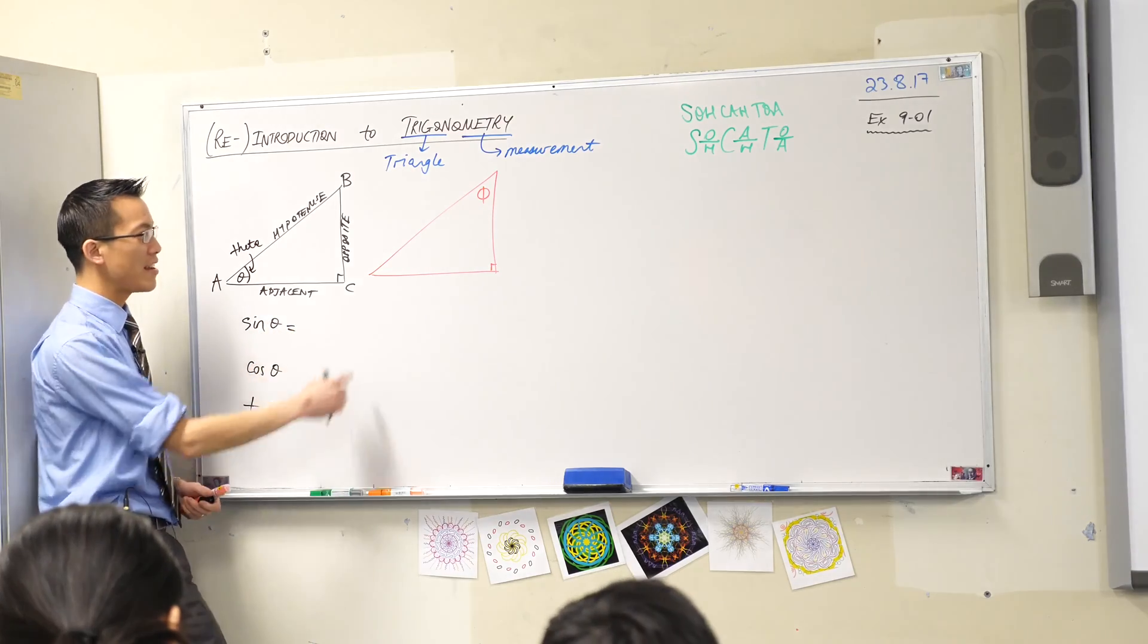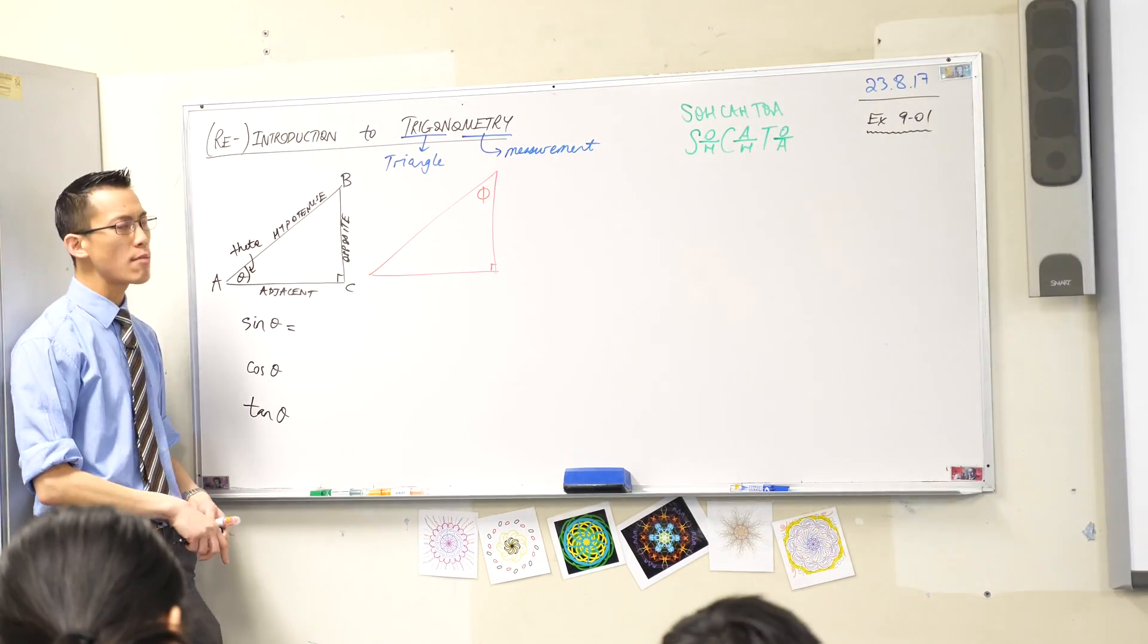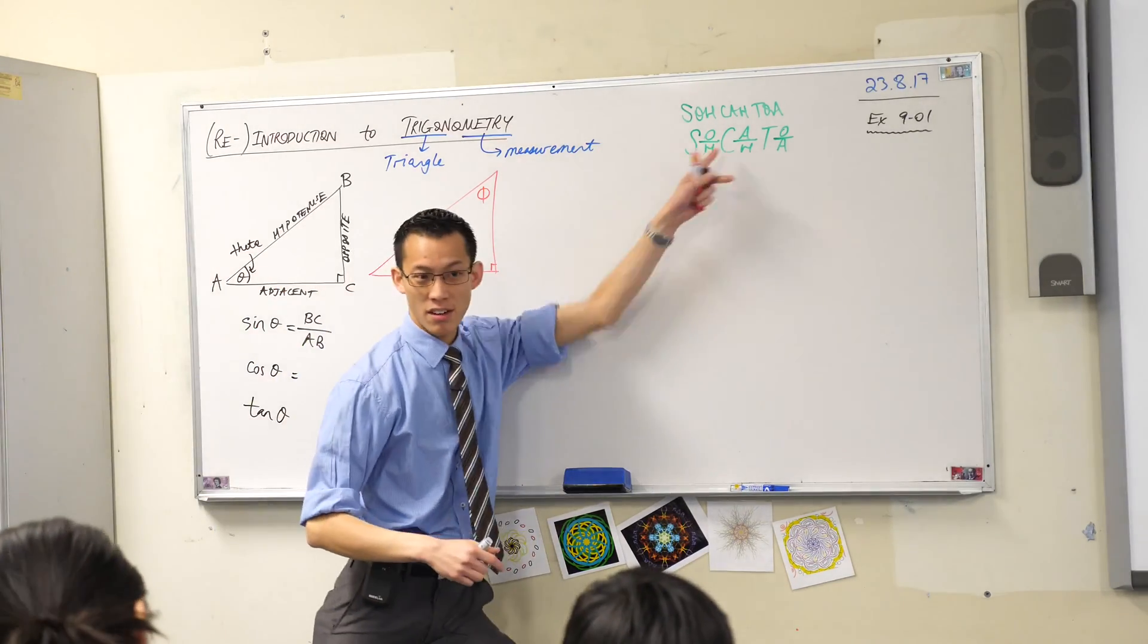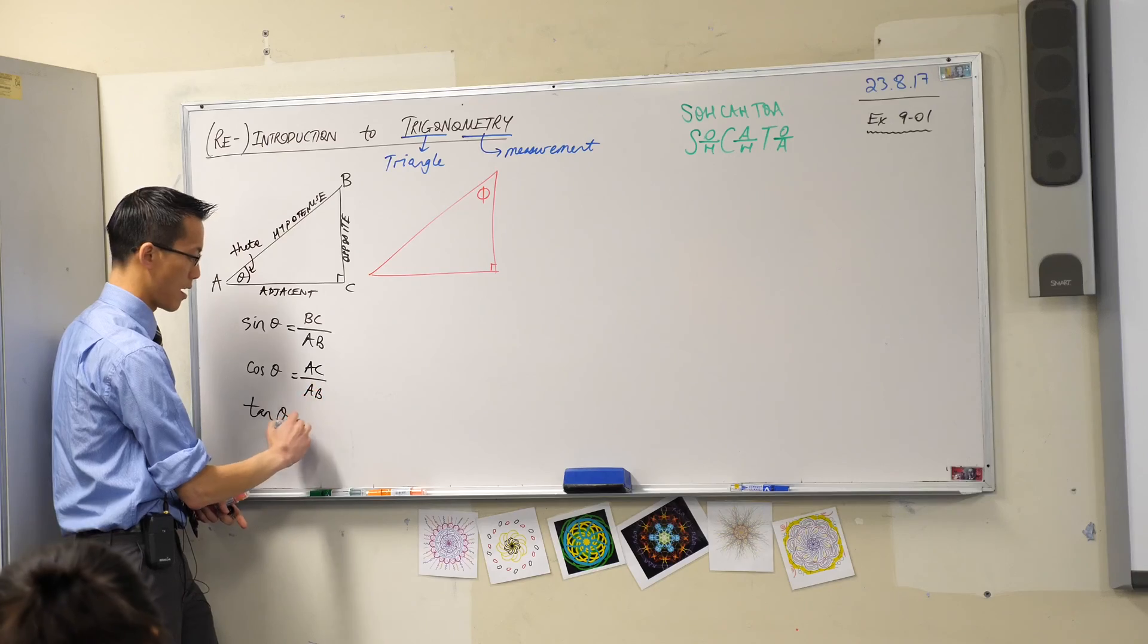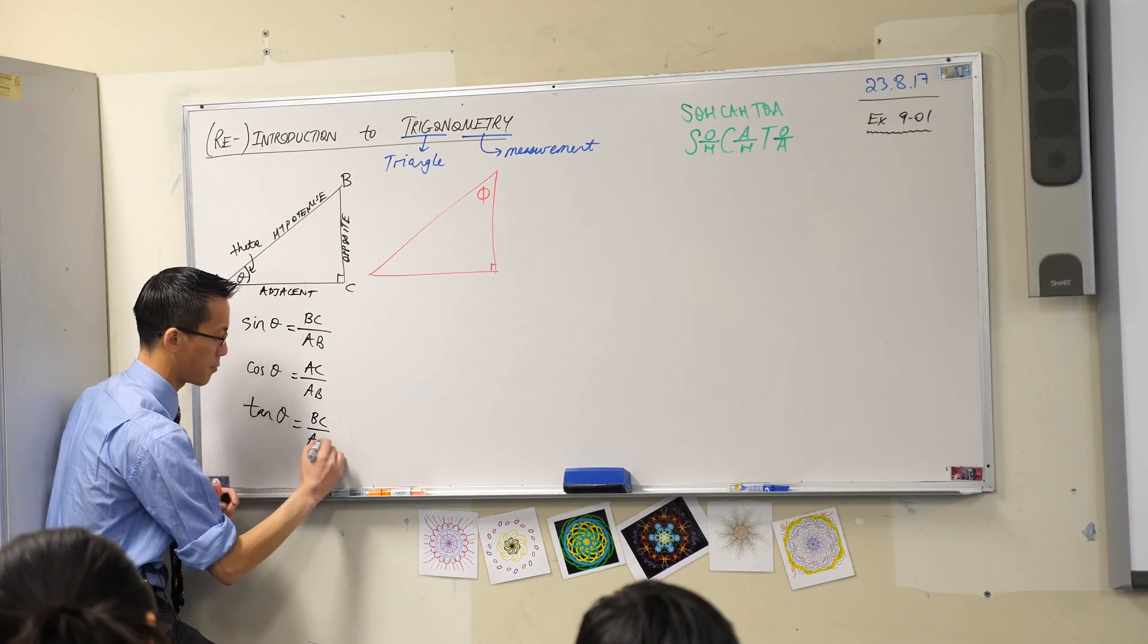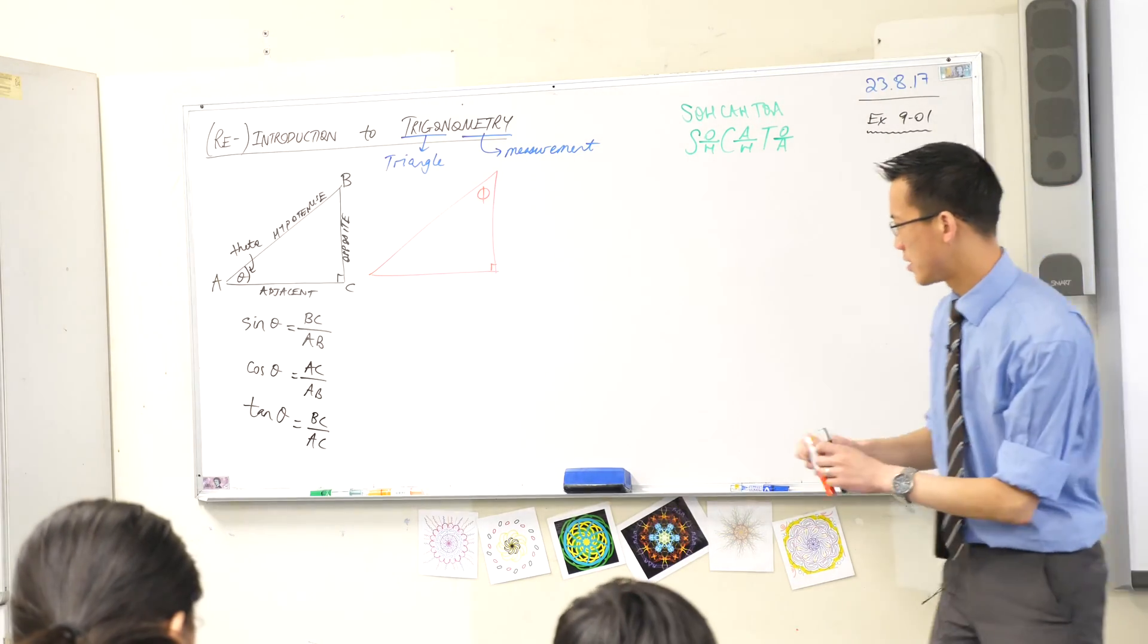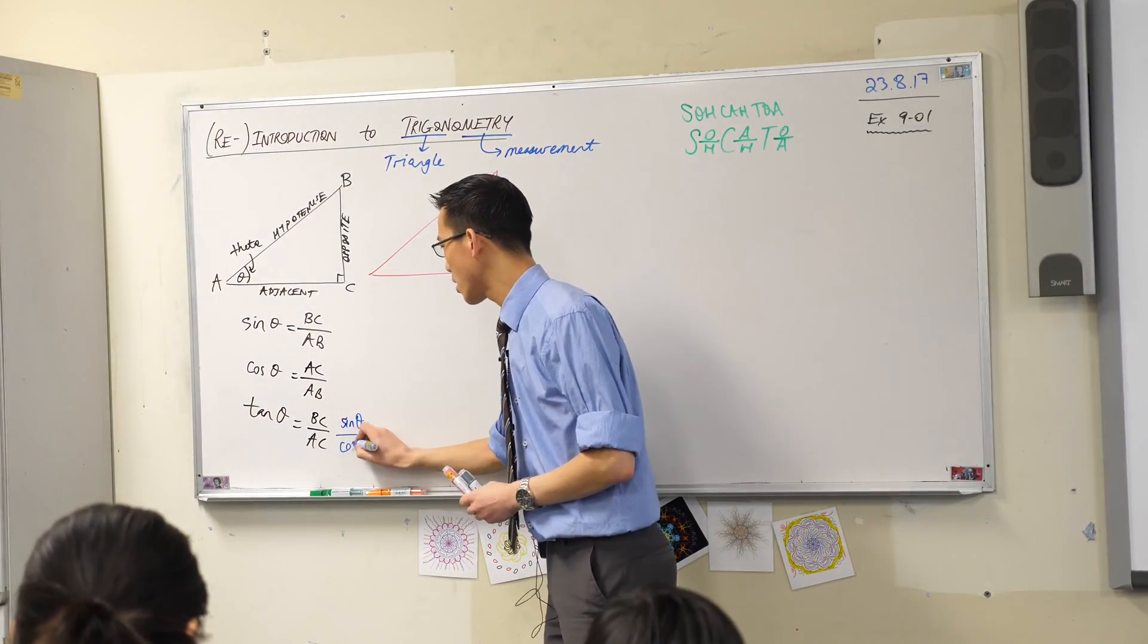So either of those is fine. Let's have a look at what it means in this particular triangle for this particular angle. Sine is opposite on hypotenuse. And I went ahead and I named all of these vertices, which means I've labelled the sides. So what's the name of the opposite side? BC. And the hypotenuse is going to be AB. Alex, good. Cos is adjacent on hypotenuse. So therefore I can say it's AC on AB. And then lastly, tan is opposite on adjacent. So it's BC on AC.